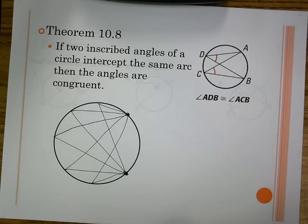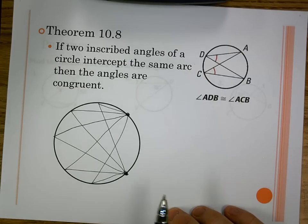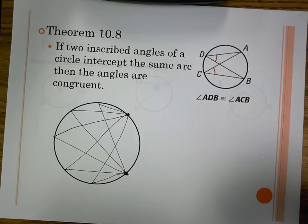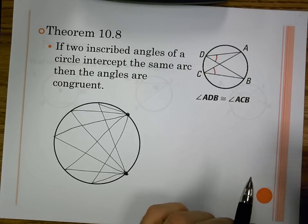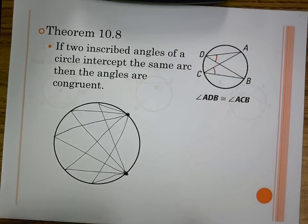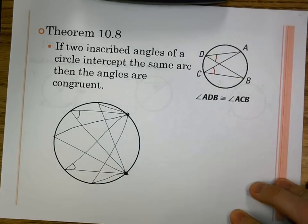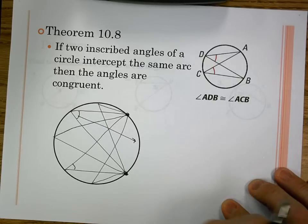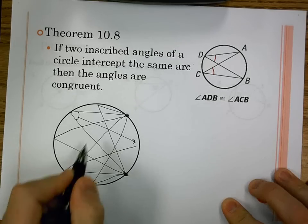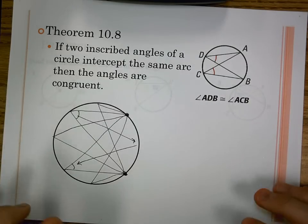Any time inscribed angles go to the same arc, they're going to be the same angle. This is a useful shortcut. Instead of two steps — finding the arc first, then finding the other angle — you can just recognize they go to the same arc and they're equal.